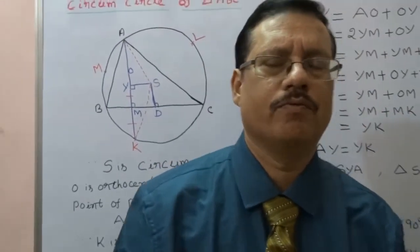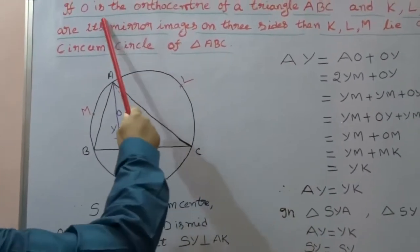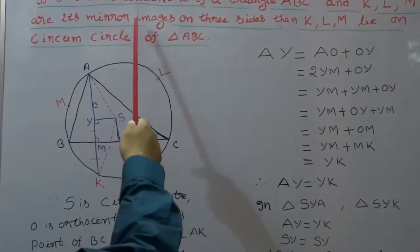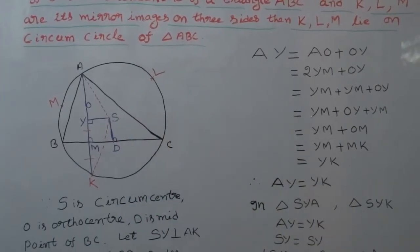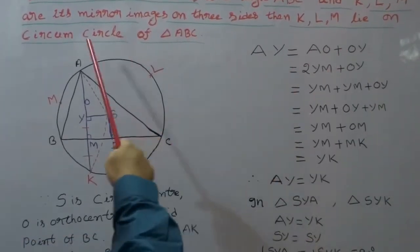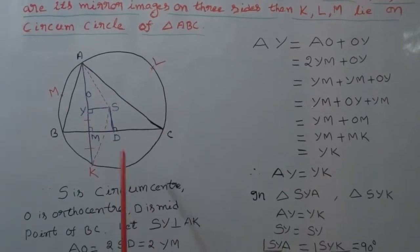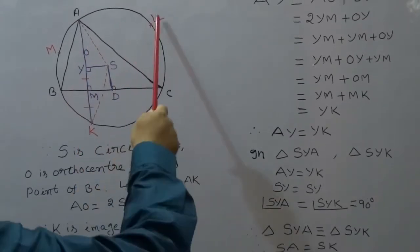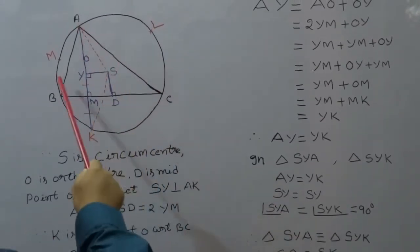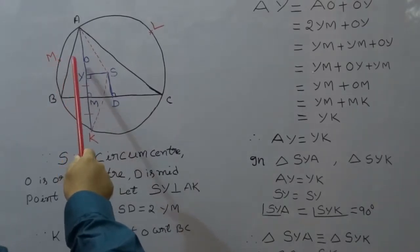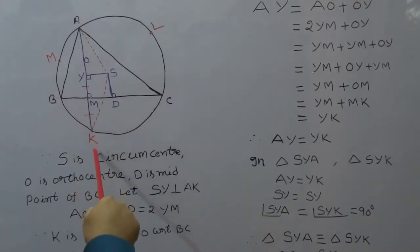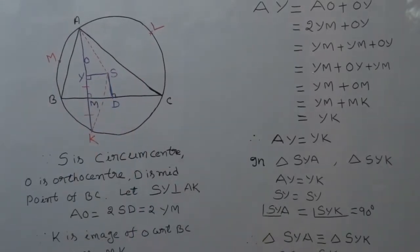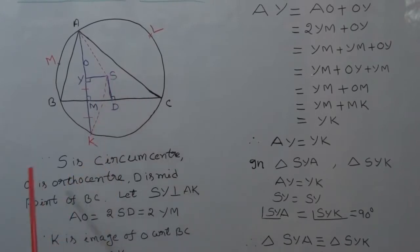Now we discuss an important concept. If O is the orthocenter of triangle ABC and K, L, M are its mirror images on the three sides, then K, L, M lie on the circumcircle of the triangle ABC. Here K is the image of O with respect to BC, L is the image of O with respect to AC, and M is the image of O with respect to AC. We have to show K, L, M lie on the circumcircle of triangle ABC, where S is the circumcenter and O is the orthocenter.